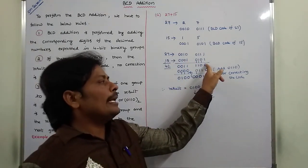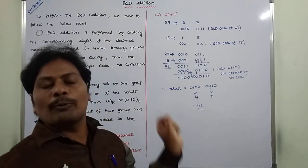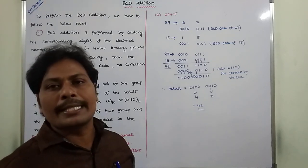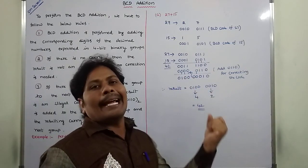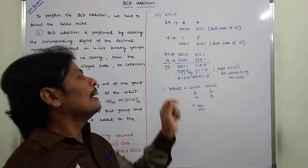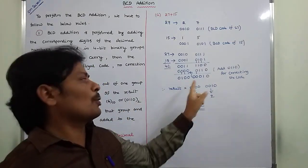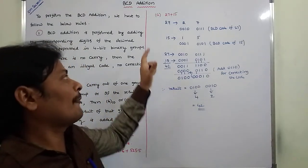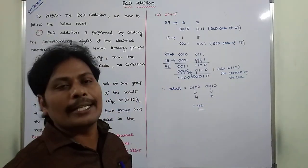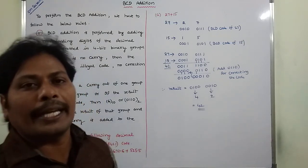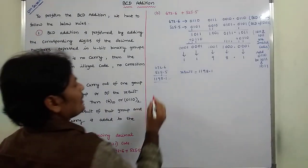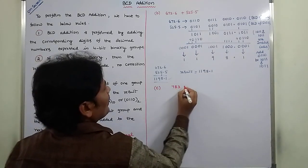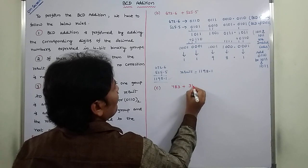In this way we perform the BCD addition operation. Now we go for the second example: 783 plus 345.